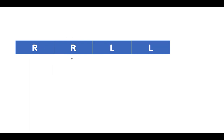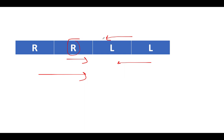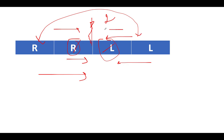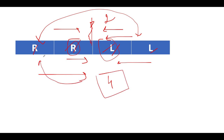The next example is R, R, L, L. Two cars are moving right and two are moving left. These two will collide and remain stationary, giving a score of two. Then these two collide and the score updates to four. The total score equals the total number of cars — R, R, L, L.